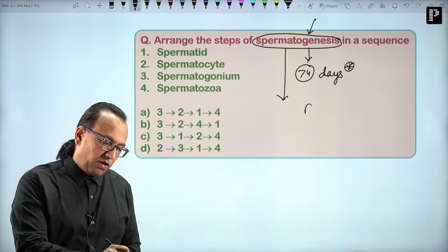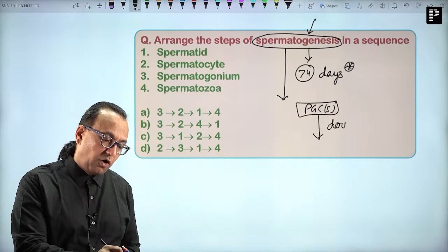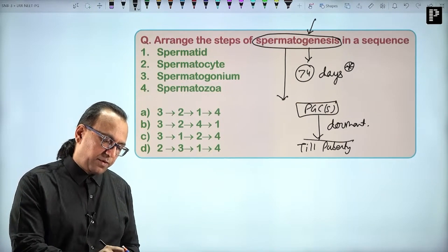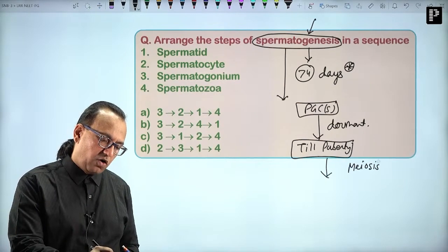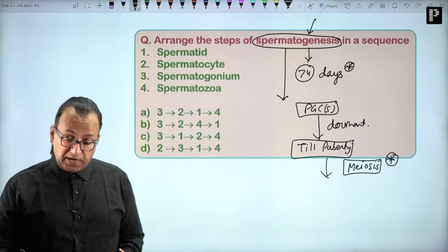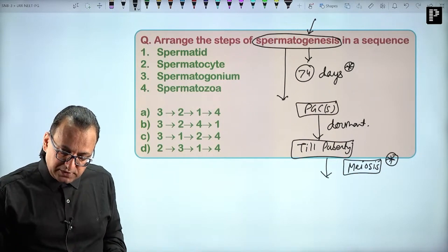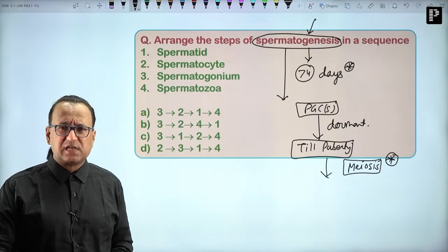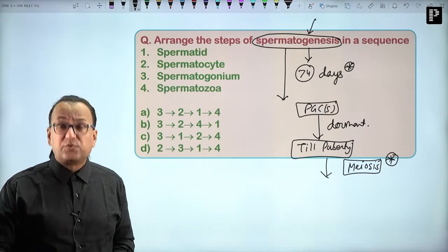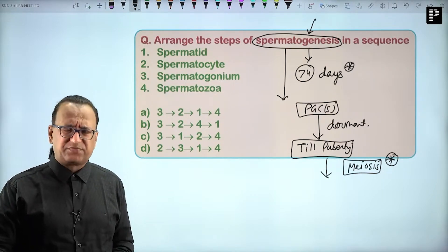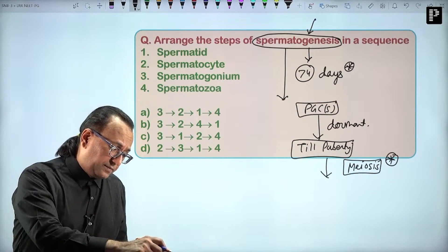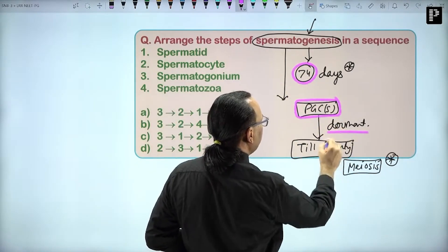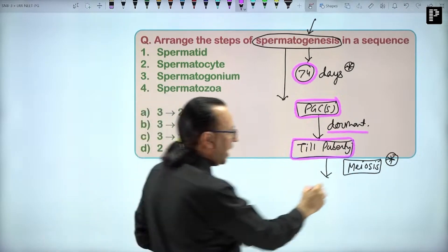Number two, remember primordial germ cells remain dormant because we are talking about a male. Primordial germ cells remain dormant till puberty. It is only after puberty you will find that the meiosis begins or spermatogenesis begins. Primordial germ cells remain dormant until puberty and meiosis begins only after puberty.